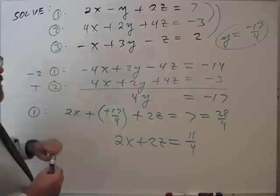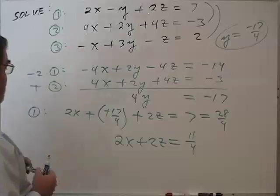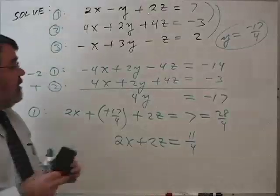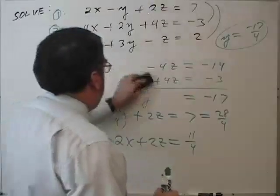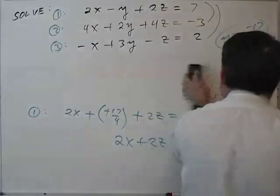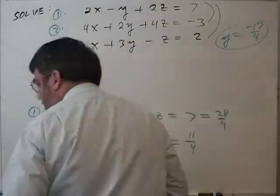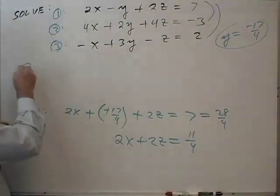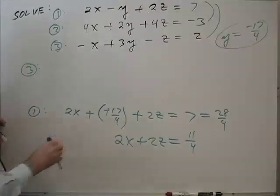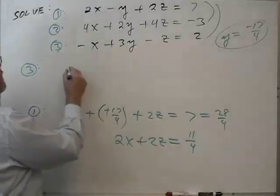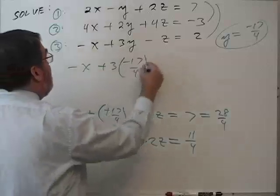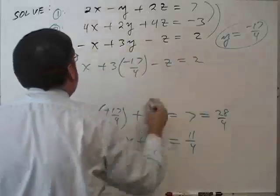And I need to use the third equation because I haven't used it yet, so, but I also need to make room. So let me erase up here. So in the third equation, I'm going to replace y with negative 17 fourths. Negative x plus 3 times negative 17 fourths minus z equals 2.